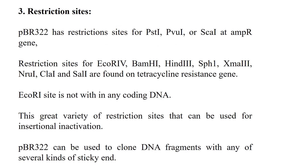Restriction sites are sites recognized by restriction enzymes, which cut at those specific sites. There are 20 restriction sites found in pBR322. The restriction enzymes PST1, PVU1, and SCAL1 are found at the ampicillin resistance gene. EcoRI, BamHI, HindIII, SPH1, XMA3, NRU1, CLO1, and SOL1 are found on the tetracycline resistance gene. In total, there are 20 restriction sites: three on the ampicillin gene and eight on the tetracycline resistance gene.